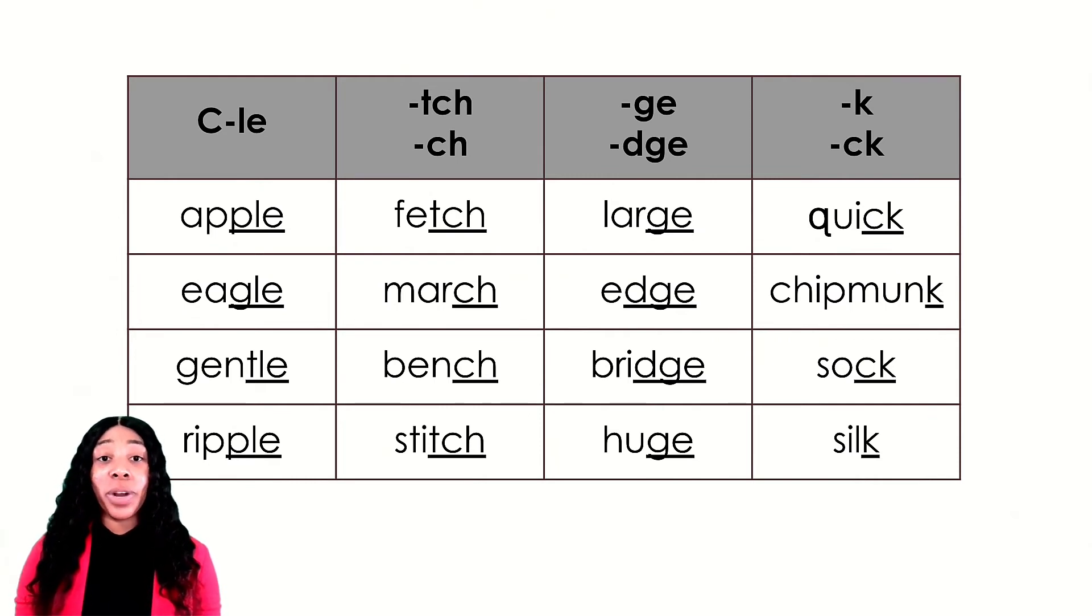And words with a k sound at the end, spelled K or C-K: quick, chipmunk, sock, silk. Wow, we sure have learned a lot. Write a silly sentence using as many of these words as you like. Don't forget to use a capital letter and ending punctuation. Now choose some words and get writing.